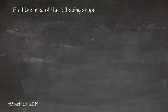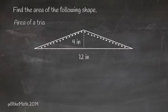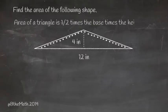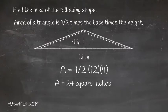Find the area of the following shape. We have a triangle, so our formula is one half base times height. So we end up with one half times 12 times 4, which would give us an area of 24 square inches or 24 inches squared.